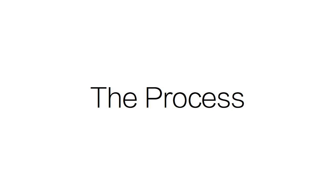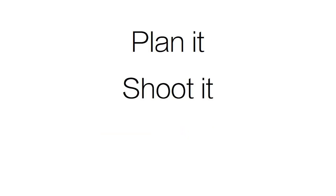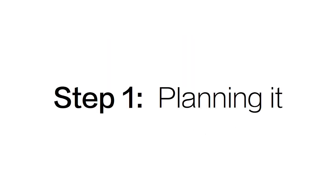Making a film project is not unlike making any art project. You prepare a project, you make the project, and then you make the project better. In filmmaking, you'll plan the film, then shoot the film, and then edit the film to make it better. In Hollywood, they call that pre-production, production, and post-production. Let's talk about the first step of filmmaking, which is planning.